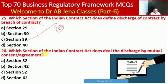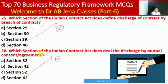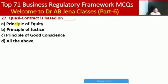Next MCQ: which section of the Indian Contract Act deals with discharge by mutual consent or agreement? Whether Section 32, 42, 52, or 62. Here D is the right option — Section 62 of the Indian Contract Act deals with discharge by mutual consent or agreement. Next MCQ: quasi contracts are based on what? Whether principles of equity, principles of justice, or principles of good conscience. Here D is the right option — quasi contracts are based on all three: principles of equity, justice, and good conscience.